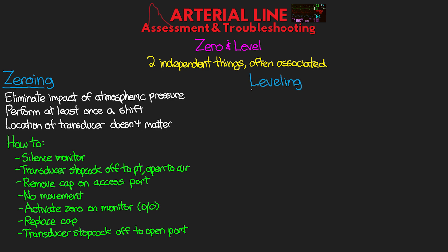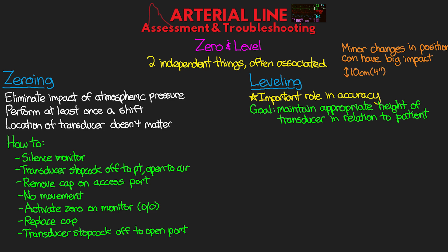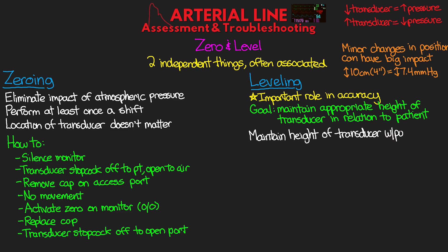Next, we want to level the transducer. Leveling plays a very important role in the accuracy of our blood pressure reading. Our goal is to maintain the appropriate height of the transducer relative to our patient. Even minor changes in transducer position can have big impacts on readings — for every 10 centimeters (about 4 inches) of difference in height, we see a 7.4 mmHg difference in our reading.